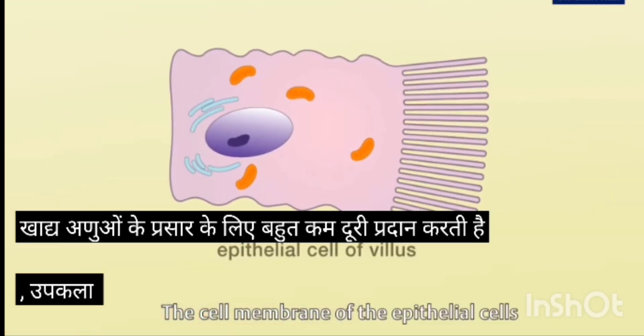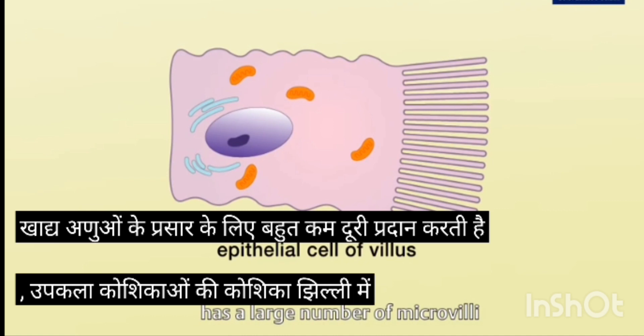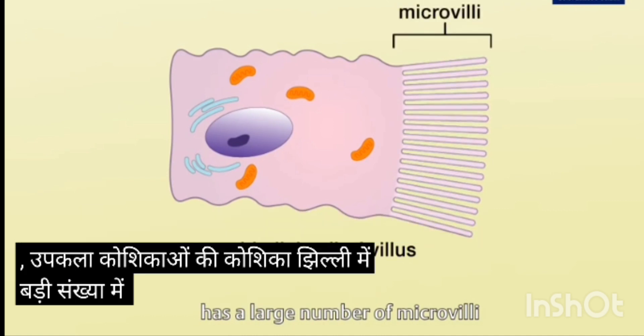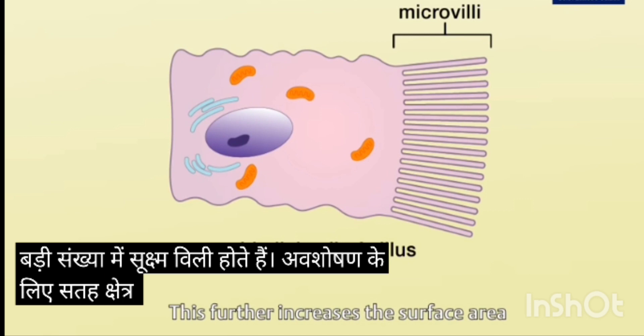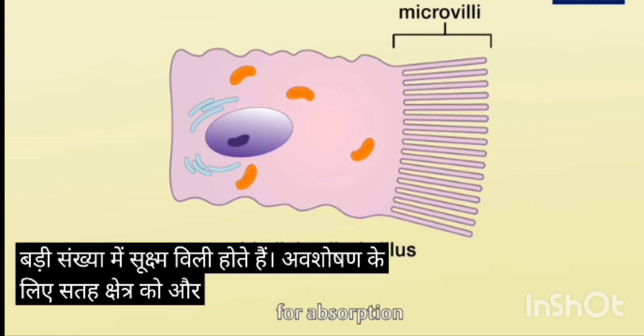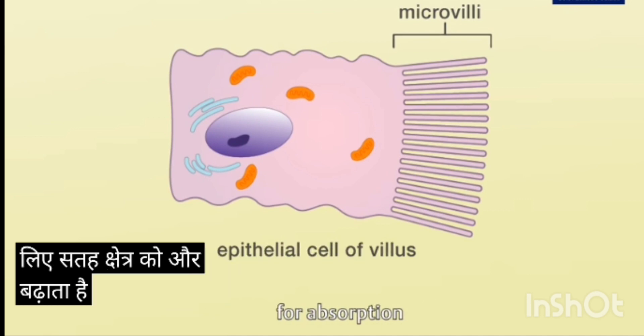The cell membrane of the epithelial cells has a large number of microvilli. This further increases the surface area for absorption.